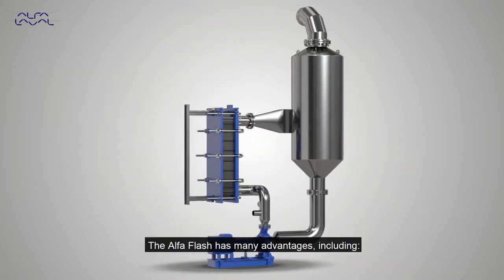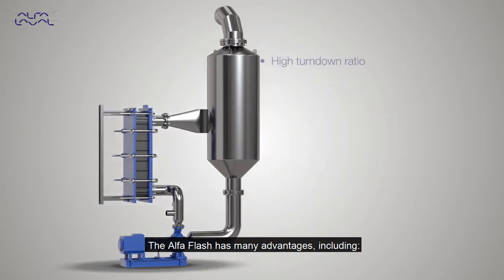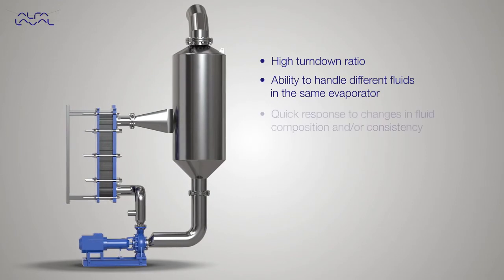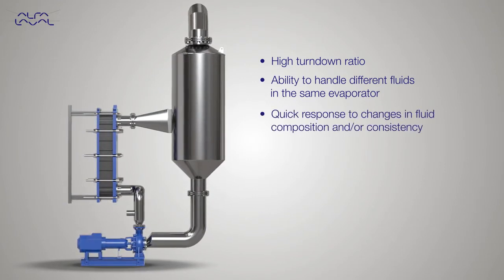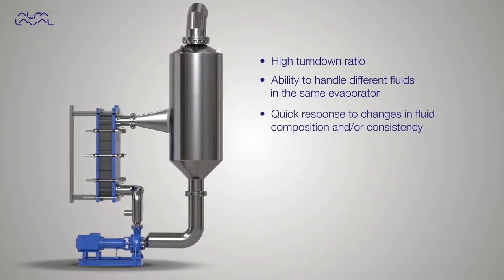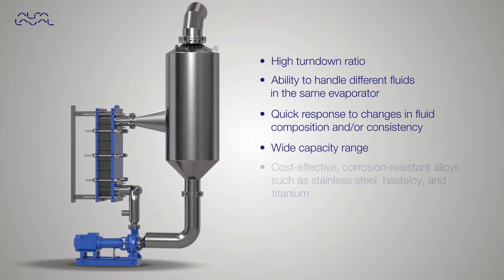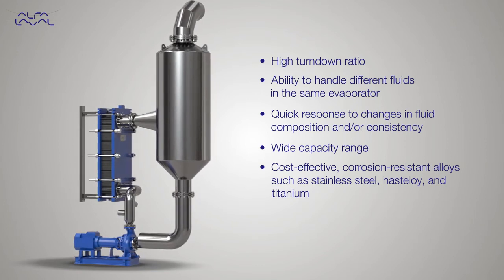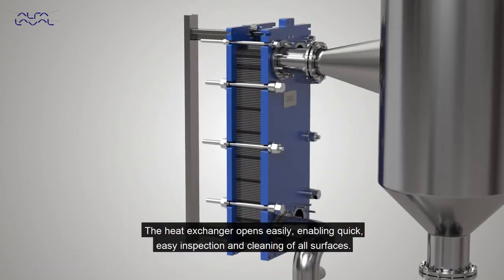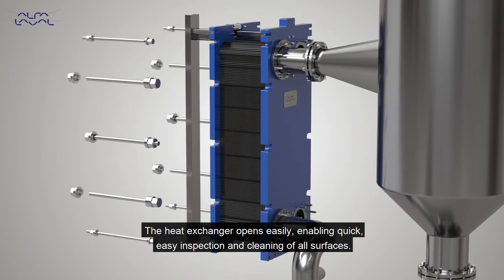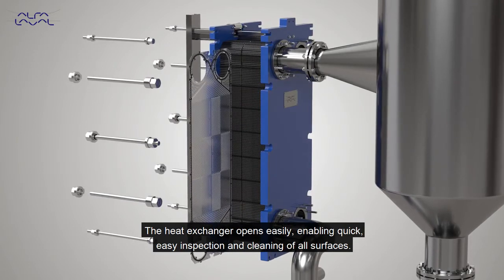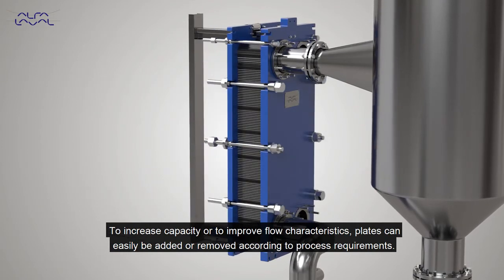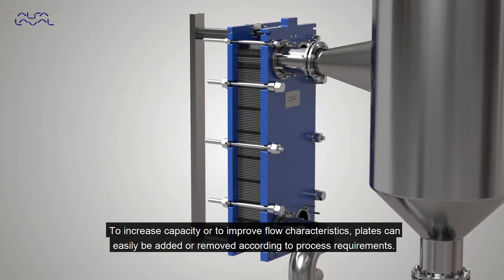The Alpha Flash has many advantages, including high turndown ratio, ability to handle different fluids in the same evaporator, quick response to changes in fluid composition and consistency, wide capacity range, and cost-effective corrosion-resistant alloys such as stainless steel, hastelloy and titanium. The heat exchanger opens easily, enabling quick, easy inspection and cleaning of all surfaces. To increase capacity or improve flow characteristics, plates can easily be added or removed according to process requirements.